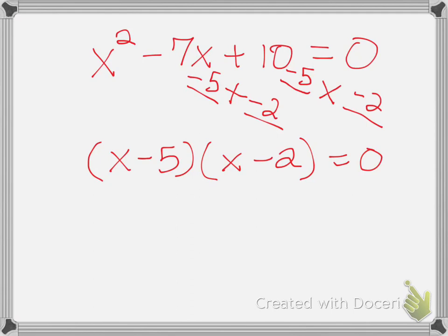So then you just take each one, set it equal to zero and solve for x, or just simply take the opposite of what you see in the parentheses. So as you can see in the parentheses, I have x minus five. What's opposite of negative five? A positive five. So that's going to be my first solution.